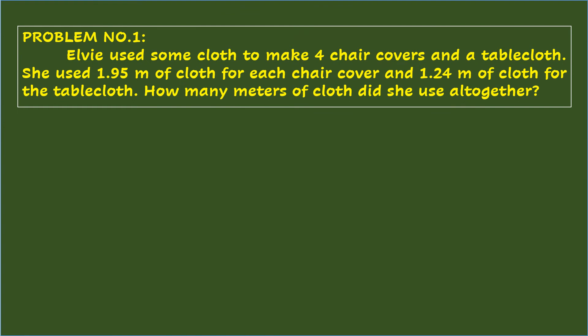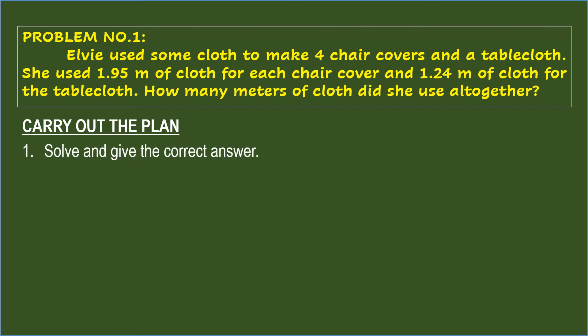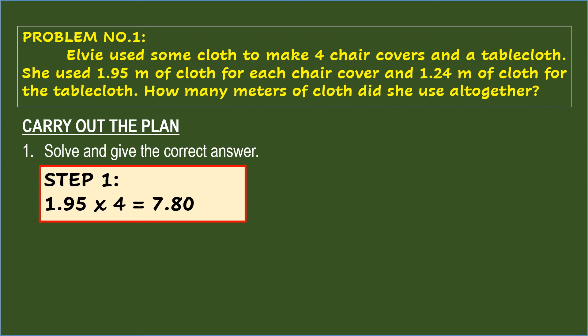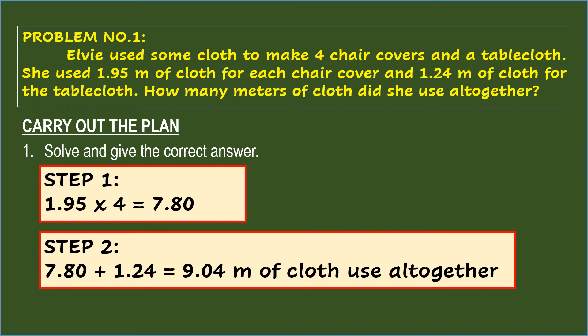After planning, you will now carry out the plan by solving and giving the correct answer. Step 1 is to multiply 1.95 by 4, and the answer is 7.80. Step 2, the final step, is to add 7.80 with 1.24, and the final answer is 9.04 meters of cloth used altogether.